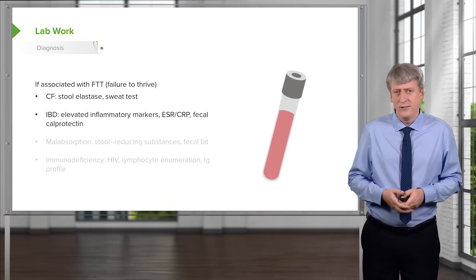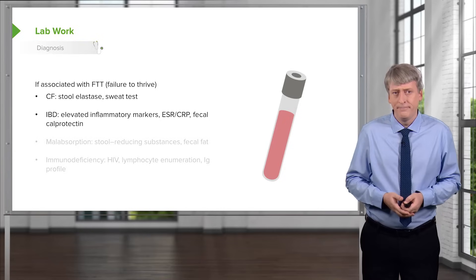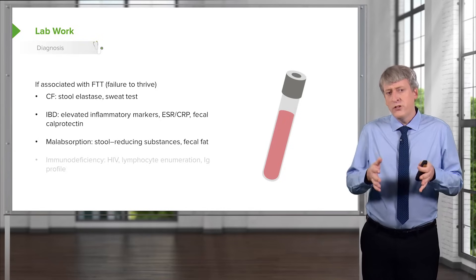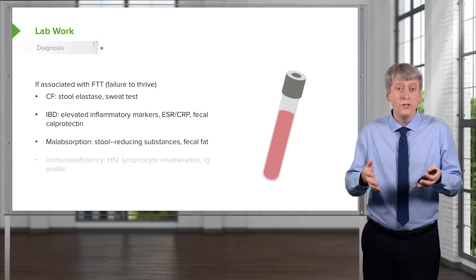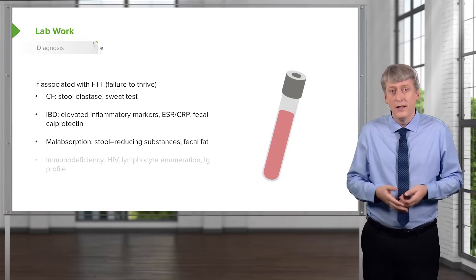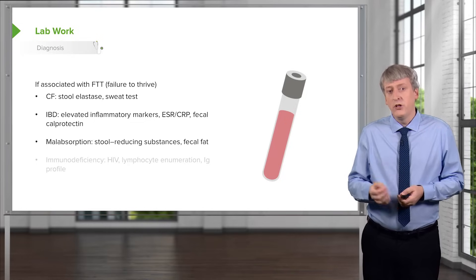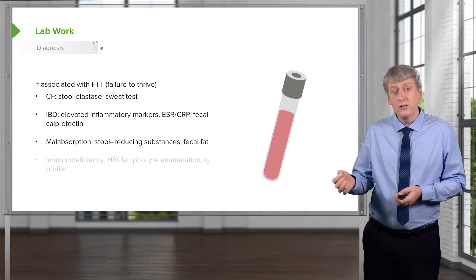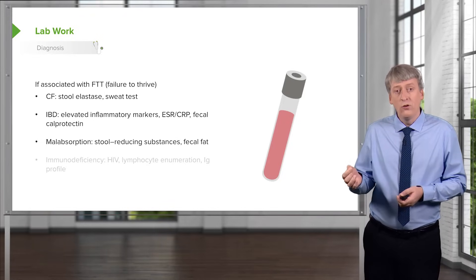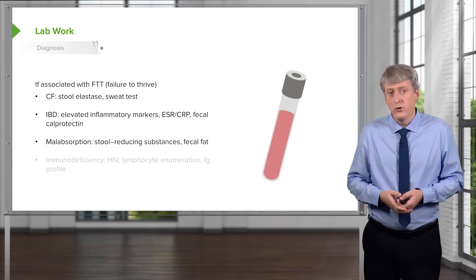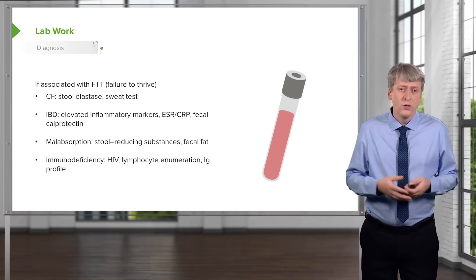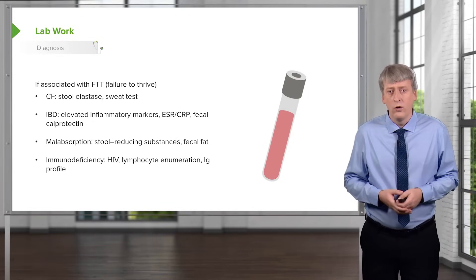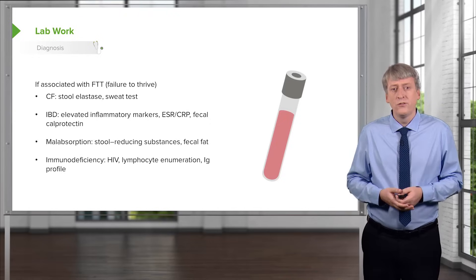Probably the best test we can get for IBD is the fecal calprotectin. For patients where we suspect malabsorption — for example, a child with edema who might have a low protein level — we can check stool reducing substances to look for sugar, fecal fat, or alpha-1-antitrypsin in the stool. If we suspect immunodeficiency, get an HIV test, check lymphocyte counts, and look at their immunoglobulin profile.